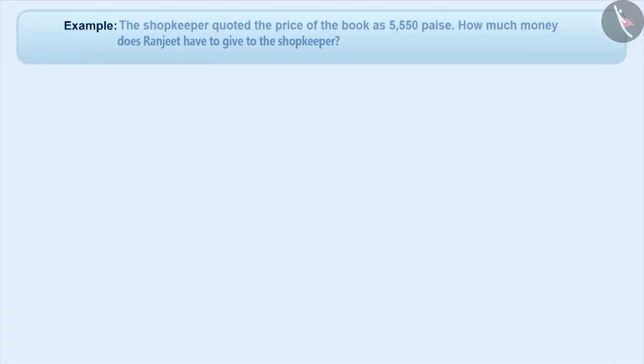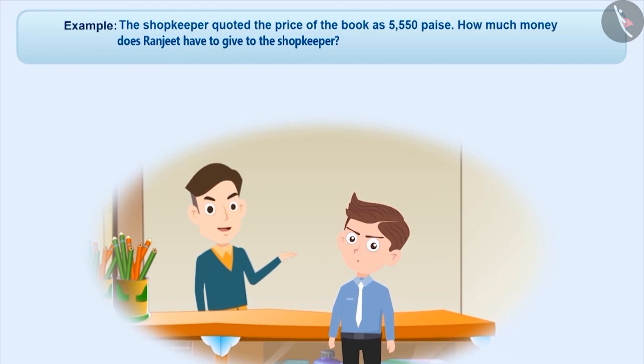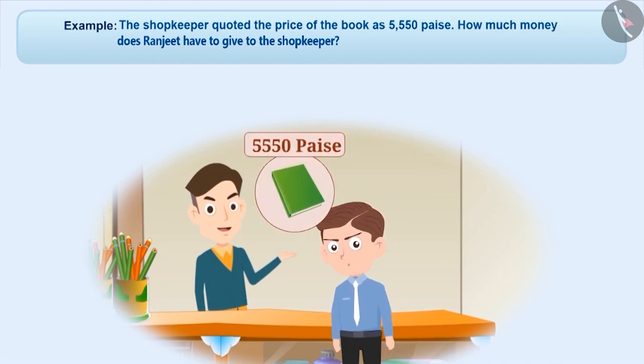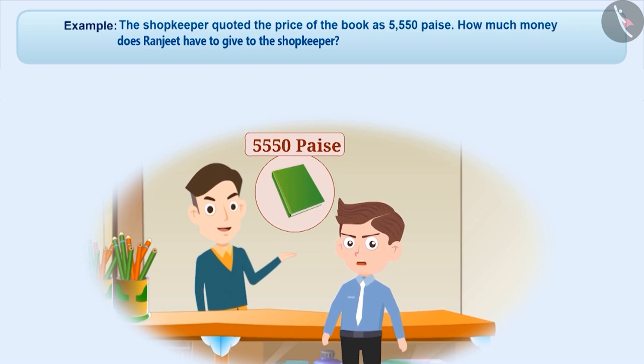Next example. There was a funny shopkeeper. Ranjit purchased a book from him. The shopkeeper quoted the price of the book as 5,550 paise. How much money should Ranjit give the shopkeeper?